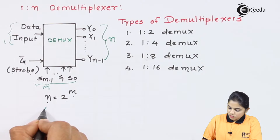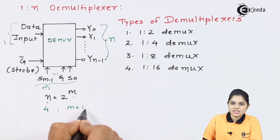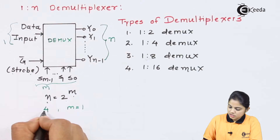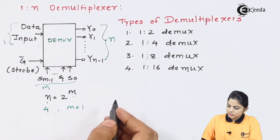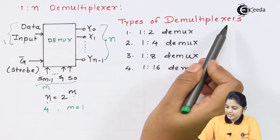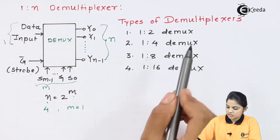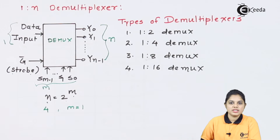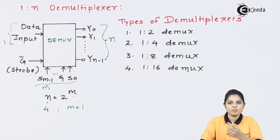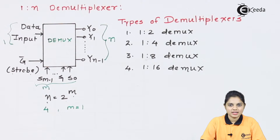The relation of N and M is: N is equal to 2 raised to M. So if the number of outputs N is equal to 4, then M should be equal to 2 — meaning there should be two select lines. According to that we have different types: 1-to-2 D-mux, 1-to-4 D-mux, 1-to-8 D-mux, and 1-to-16 D-mux. We can discuss one by one how each D-multiplexer works and how the input data is forwarded to a particular output using the select line.